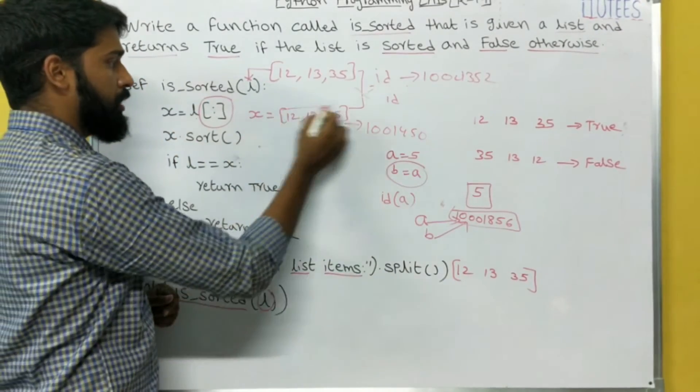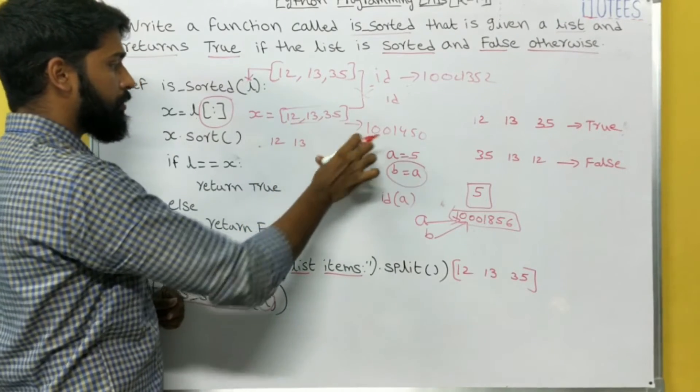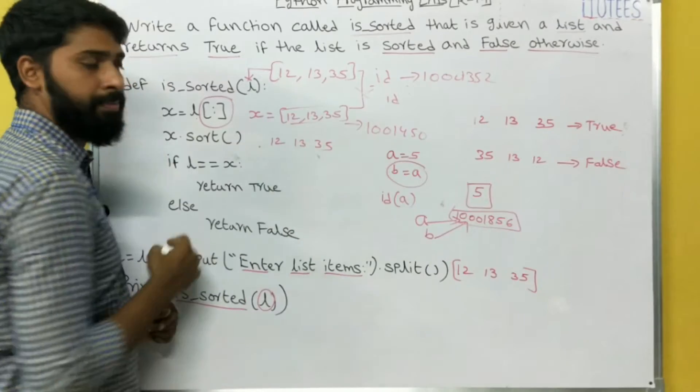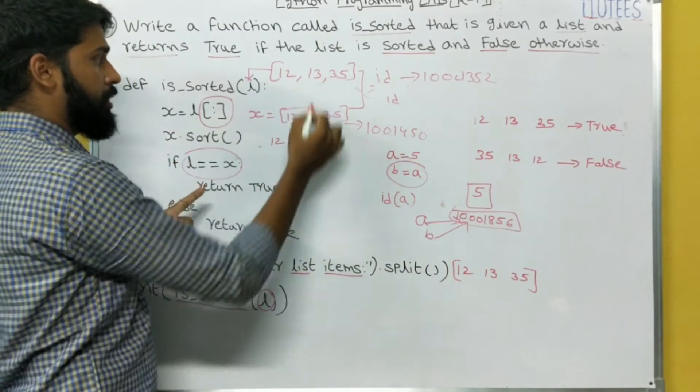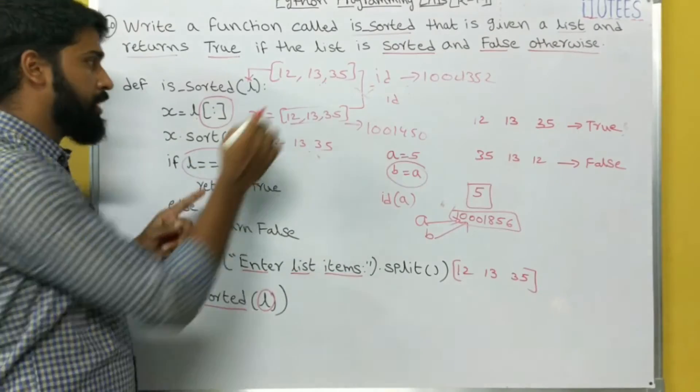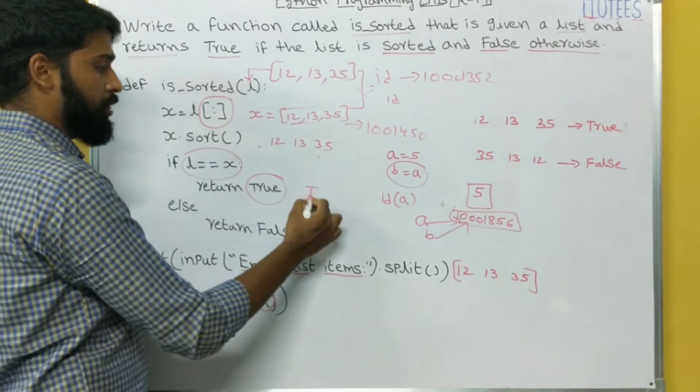So next, X dot sort. What is X dot sort? 12, 13, 35. Now you can check that L equals equals to X or not. Yes, it is equal. So in this case, you are going to print True.